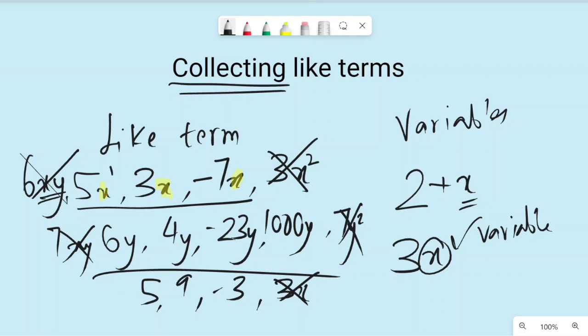Collecting like terms means when the terms are like, you can bring them together. You can add them or subtract them. But if they are unlike, you can't do anything with them. They will stay the way they are. Let's do some examples.